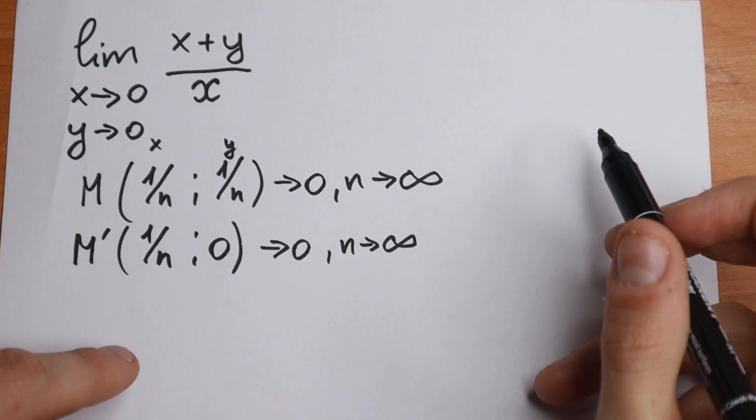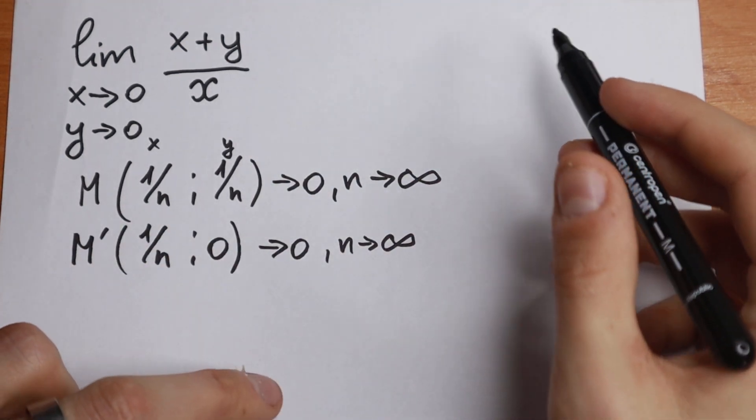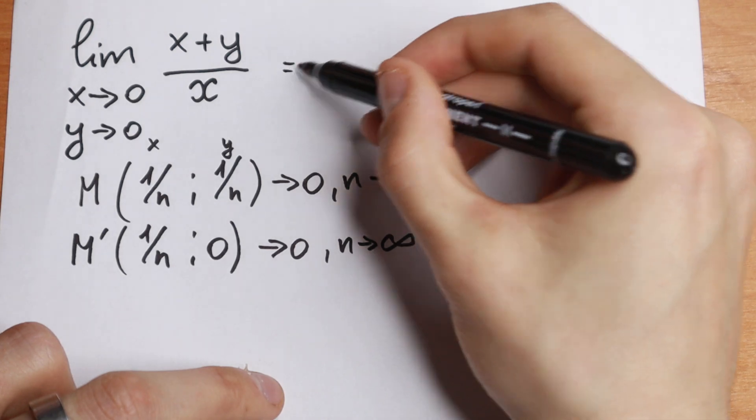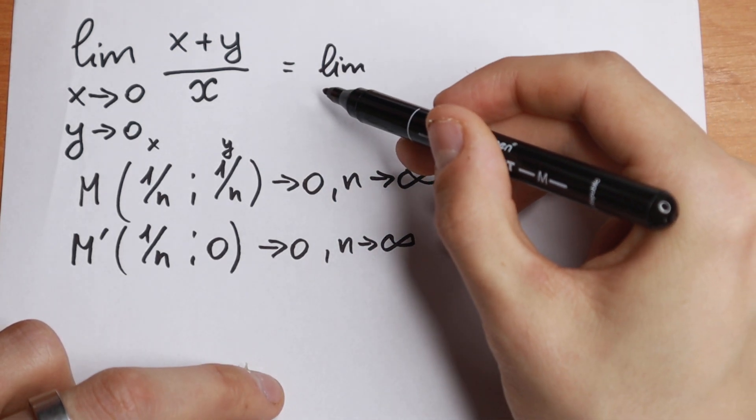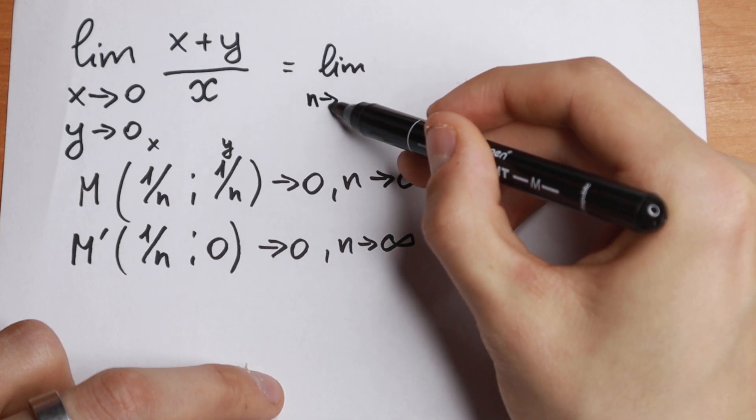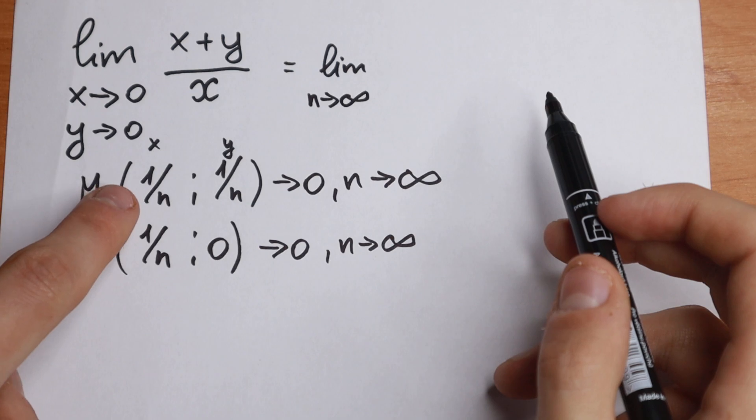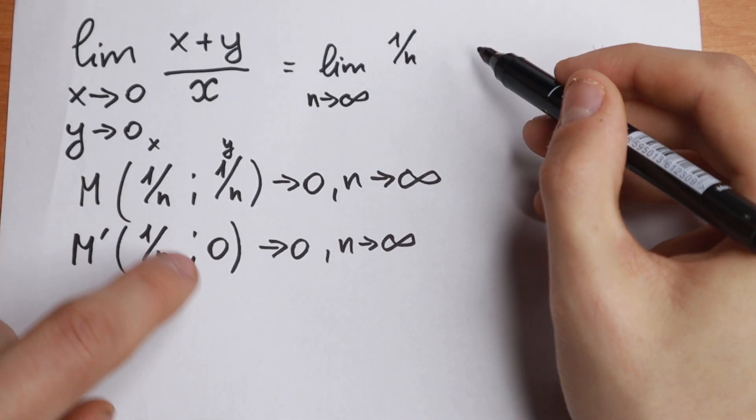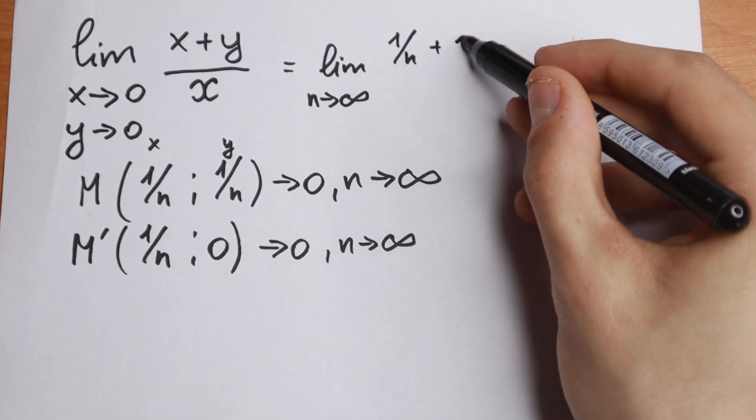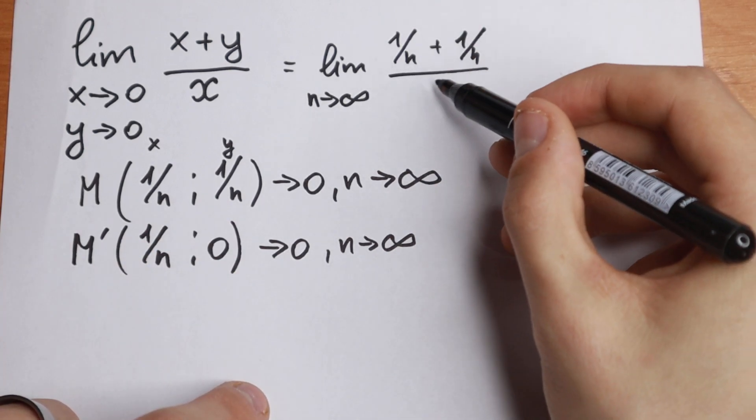So what we will do in our case? Let's change this x and y by this one. Let's use this substitution. What we will have? That this limit will be equal to limit as n approaches to infinity, because right here n approaches to infinity. But we don't have x and y, we have these dots. We will have our x 1 over n and our y plus 1 over n as well, and dividing by 1 over n as well.